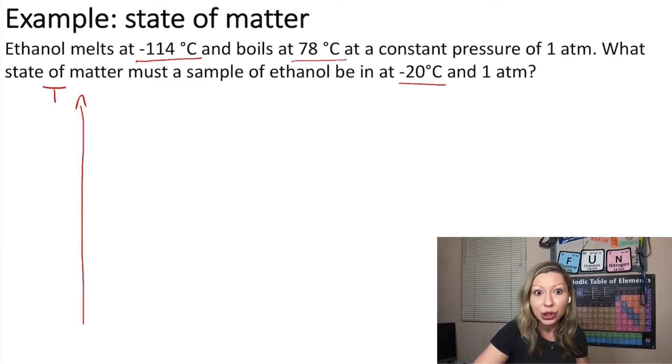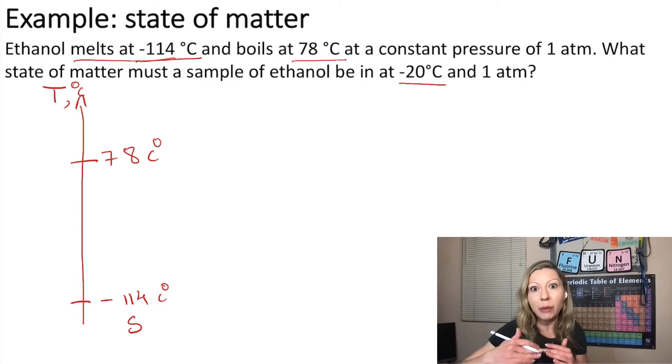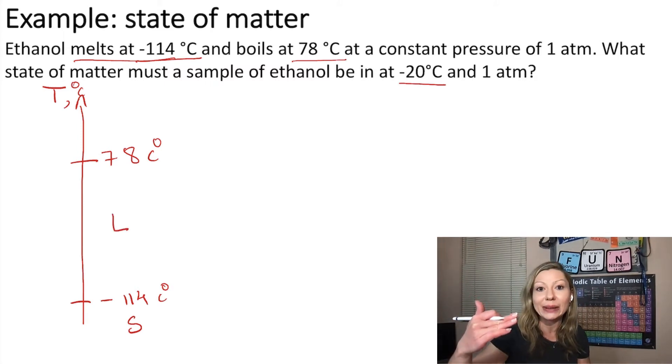I'm going to have the temperature right here in degrees Celsius. I know that ethanol melts at minus 114 degrees Celsius, so this means that below this temperature I'm always going to have a solid. It boils at 78 degrees Celsius, so between minus 114 and 78 I'm going to have a liquid, and above 78 degrees Celsius I'm going to have a gas.